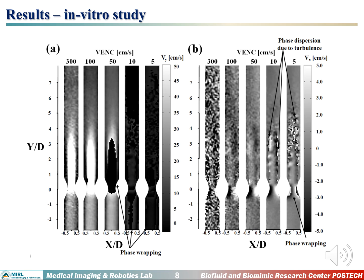Figures A and B indicate the axial velocity and radial velocity. At a high VENC parameter, the high velocity region is clear, but there is high random noise at the axial and radial velocity fields. At lower VENC measurements, velocity noise is reduced, but it produces phase wrapping at the high velocity region and phase dispersion at the post-stenosis region due to turbulence.